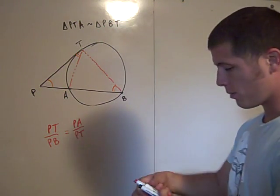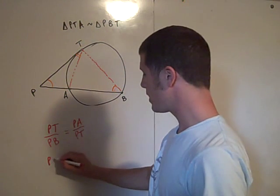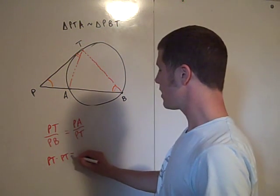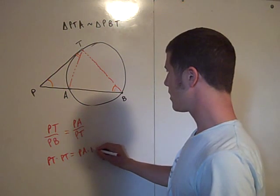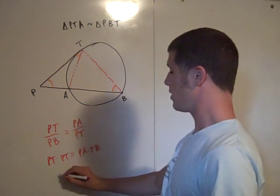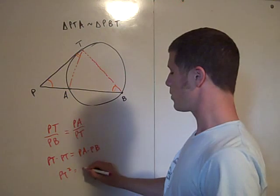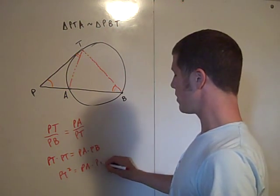So then you can cross multiply. So you have PT times PT equal to PA times PB, which is PT squared equals PA times PB.